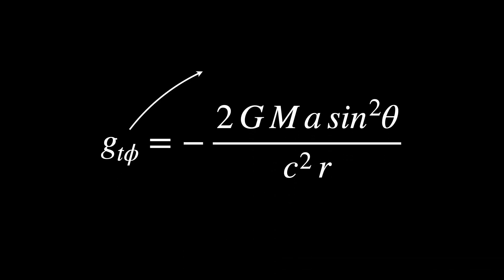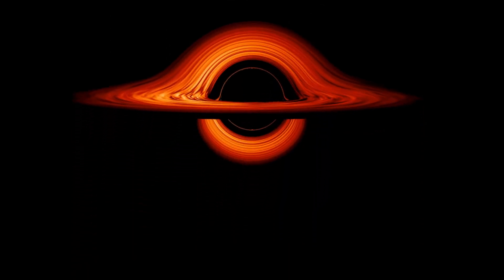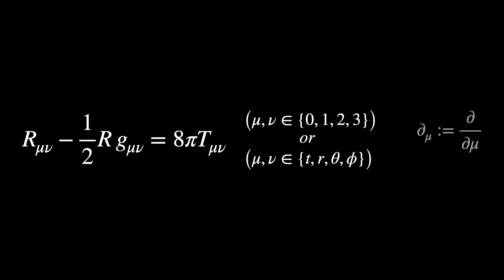If we had non-zero off-diagonal terms, the coordinate basis vectors would no longer be orthogonal to each other. For example, the Kerr solution has a non-zero term which introduces coupling between time and angular components. The Kerr metric describes a rotating black hole.